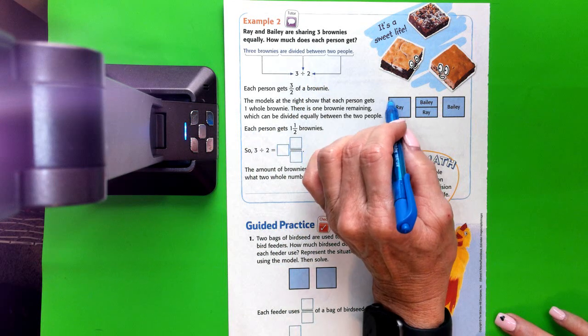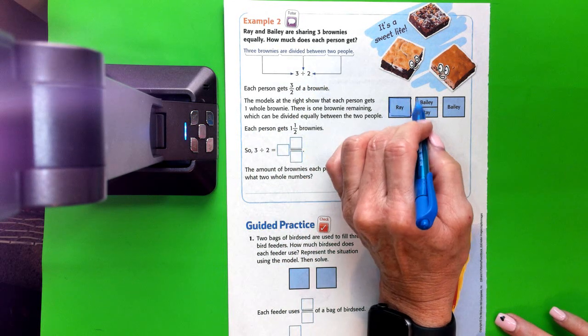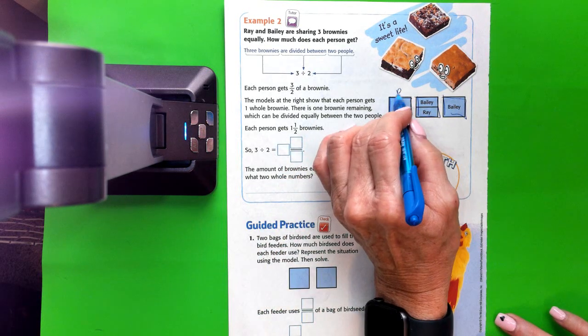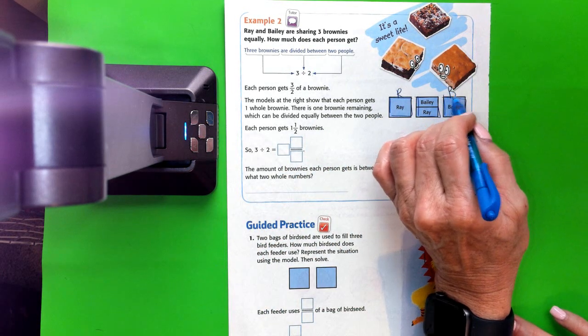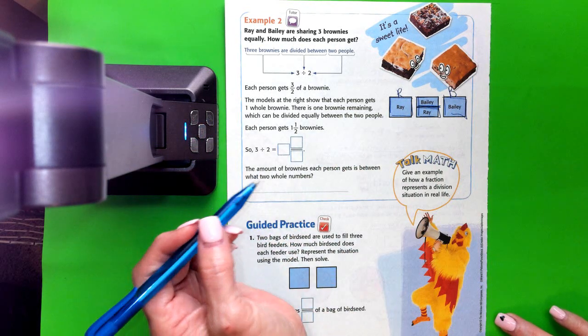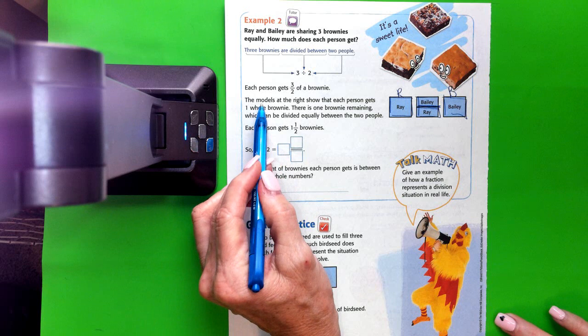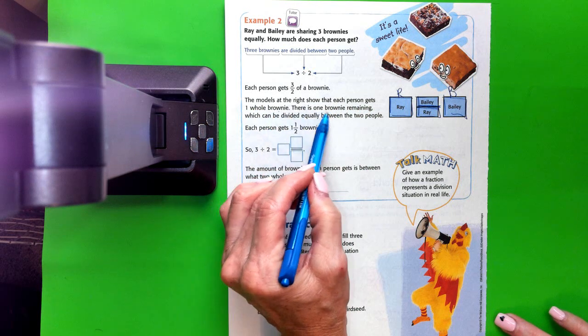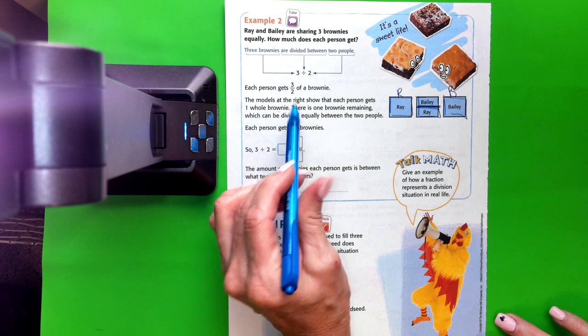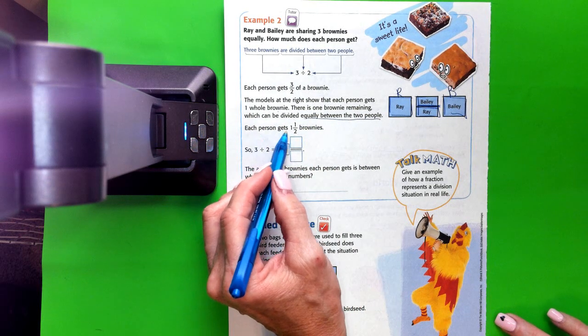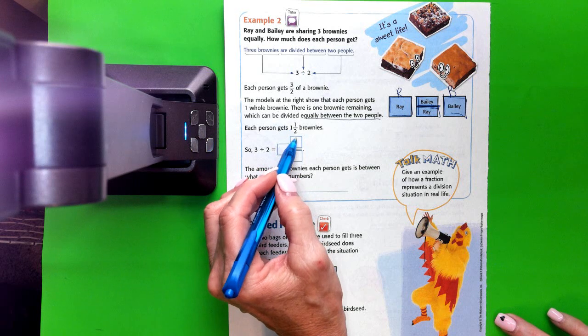And then they drew our pictures. So we've got three brownies, and they gave one to Ray, they gave one to Bailey, and the other one they split in half. The models at the right show that each person gets one whole brownie. There is one brownie remaining, which can be divided equally between the two people. So each person gets one and a half brownies.